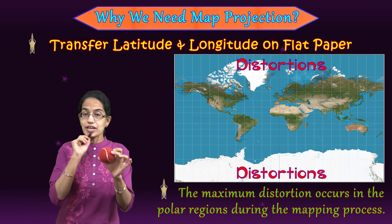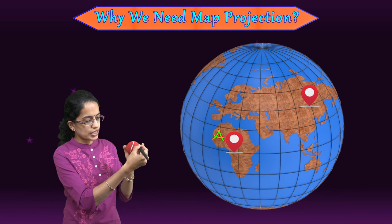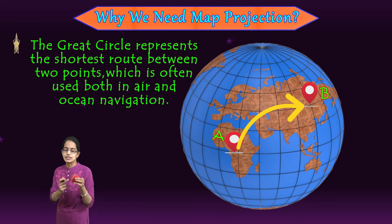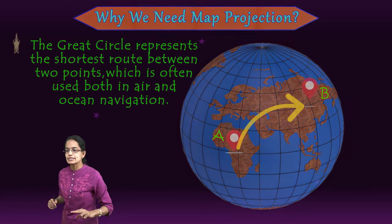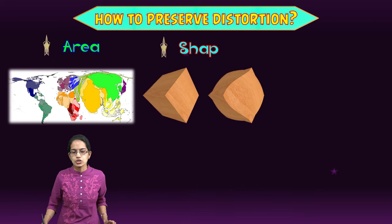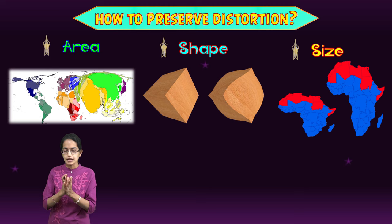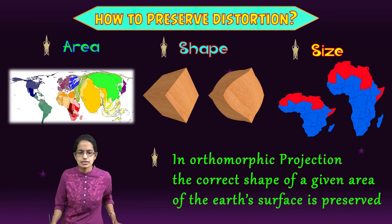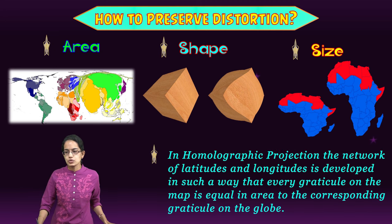Just for reference: if two locations A and B are on the globe and a person wants to fly between them, the shortest path always follows the great circle. Understanding how we preserve the three important distortions — area, shape, and size — is key. When the correct shape of a given area is to be maintained, we say this is an orthomorphic projection. When equal area is preserved, it is known as homolographic.